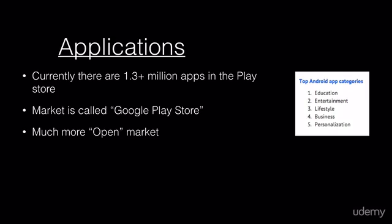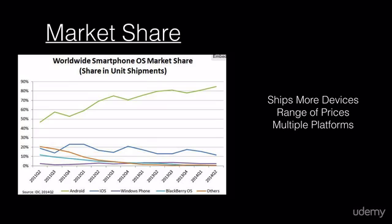The top Android categories in the Google Play Store are currently education, entertainment, lifestyle, business, and personalization. Getting down to market share, Android is one of the top mobile OSs in the mobile space right now. It's constantly growing quarter over quarter, and for multiple reasons.